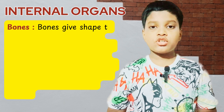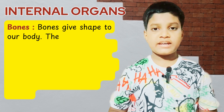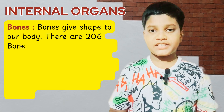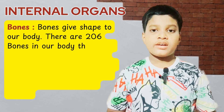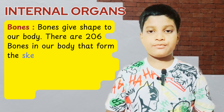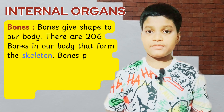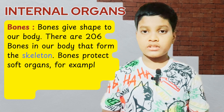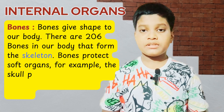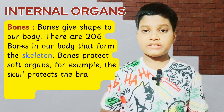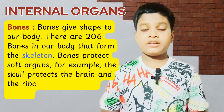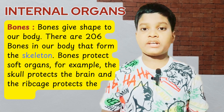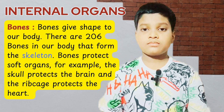Bones give shape to our body. There are 206 bones in our body that form the skeleton. Bones protect soft organs. For example, the skull protects the brain and the ribcage protects the heart.